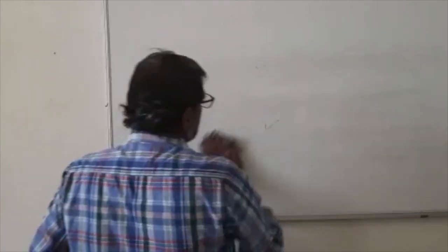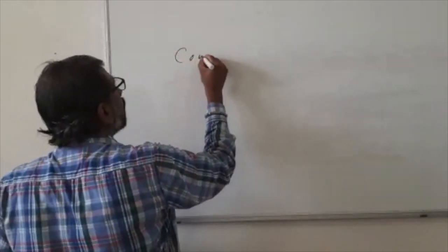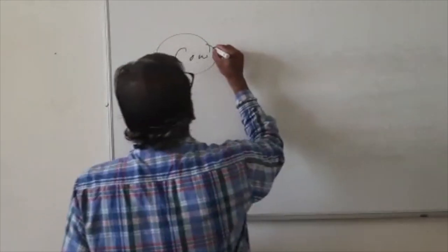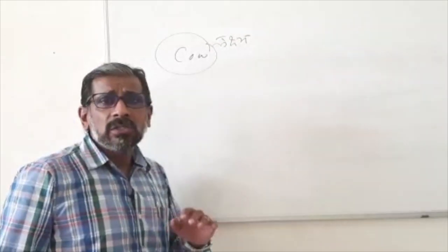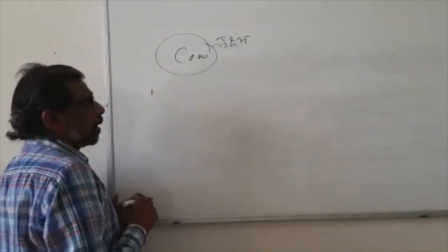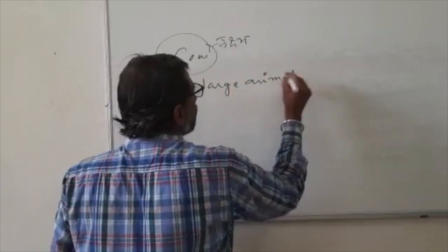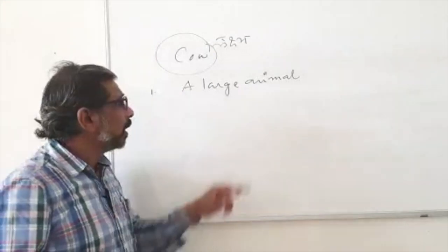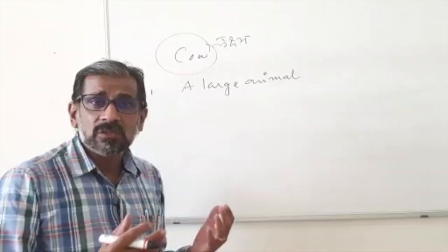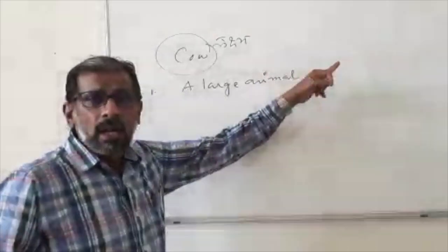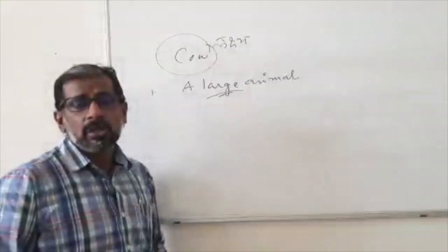Now let us explain with the help of a simple example. Suppose cow is our Lakshya. So elephant, horse, zebra, pen, pencil, house, car — all these are Alakshya. Suppose I define cow as 'a large animal.' It is not a true definition because elephant is a large animal, giraffe is also a large animal, buffalo is a large animal, and ox is also a large animal. So the Alakshya also have this character, making it not a true definition. Such a definition is called Ativyapti.